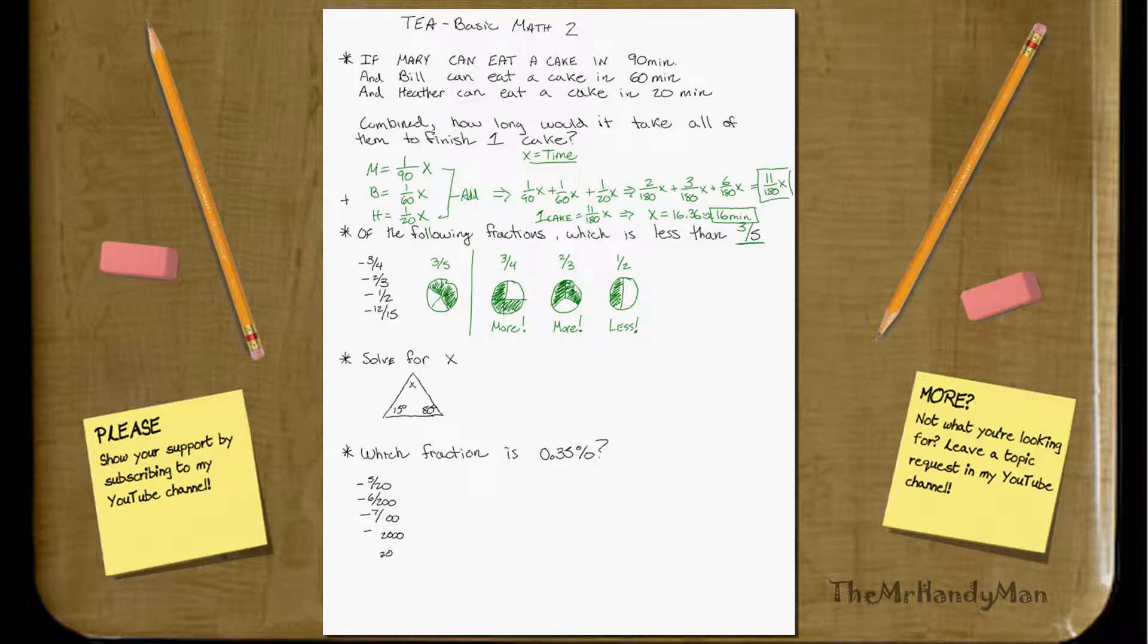Well, actually, on this one, this one's just 12 15ths. You can actually almost see this numerically. That will simplify out to 4 fifths. Well, 4 fifths is obviously greater than 3 fifths. So that one we don't really need to draw. So our solution right here is 1 half.